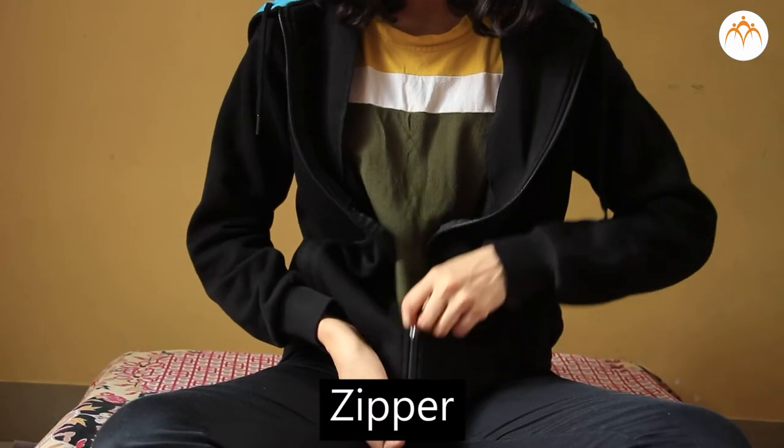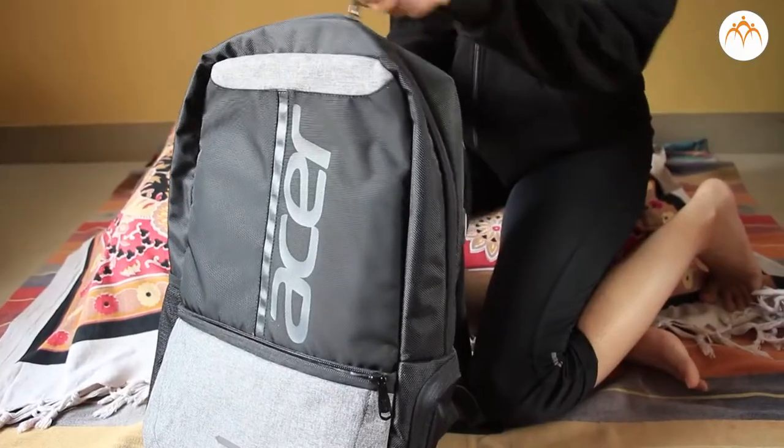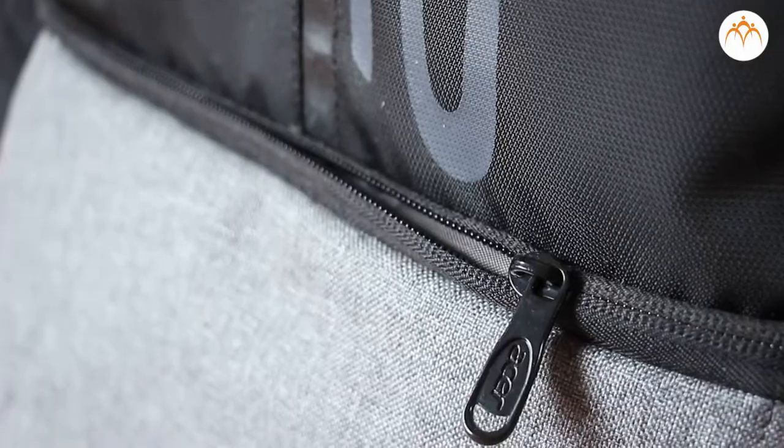Zipper uses wedges to hold your clothes together and bags shut. It has a special kind of teeth which are shaped like wedges.